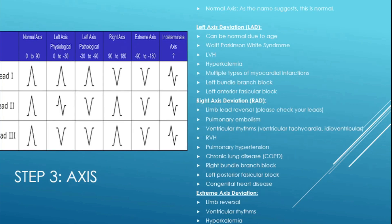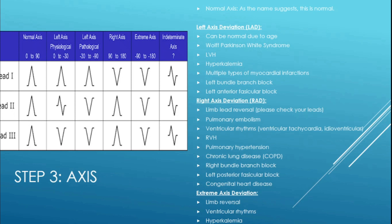Step three: axis. Many people glance over this and don't even look at it because they think it's so complex and hard. You can see in the picture how to actually determine the axis of a 12-lead. Look at the QRS complex and determine if it's positive or mostly positive, negative or mostly negative, or indeterminate — equally positive and equally negative — and just compare it to the graph. It's really not that hard.